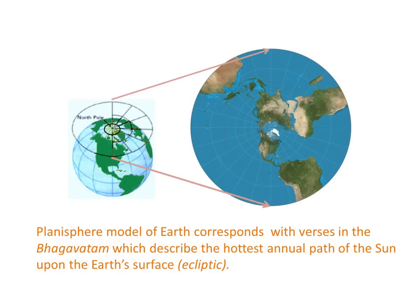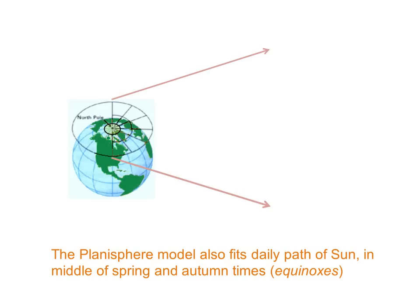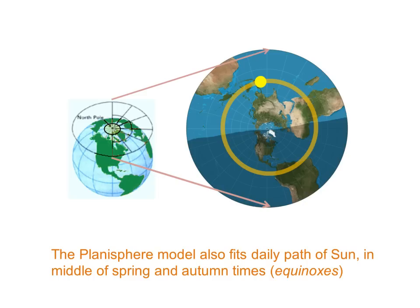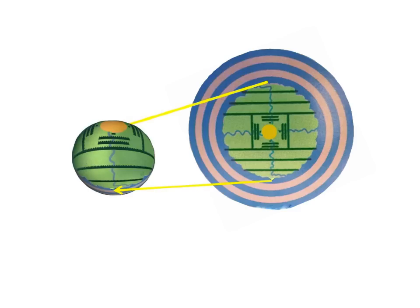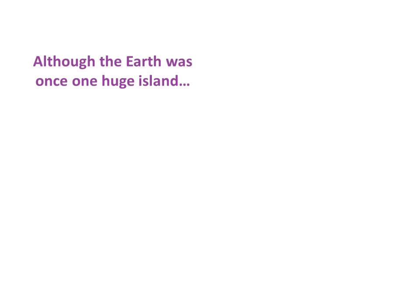The planisphere model of the Earth corresponds with verses in the Bhagavatam which describe the yearly annual path of the Sun upon the Earth's surface. This is called the ecliptic. The planisphere model also fits the daily path of the Sun in the middle of spring and autumn times. That's called the equinoxes. In this model, Jambodvip and its surrounding rings is essentially the Earth in stereographic projection. And it places Mount Meru at the North Pole in this particular model. However, the features of Jambodvip and the northern hemisphere of today do not match this model. Although once, the Earth was one huge island.